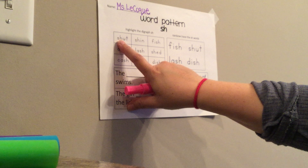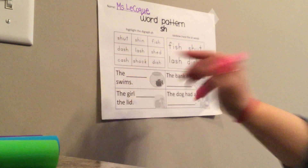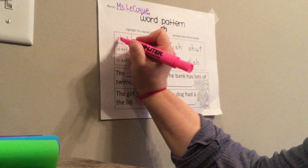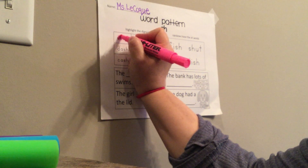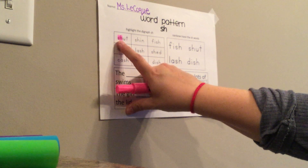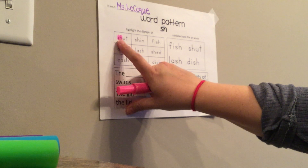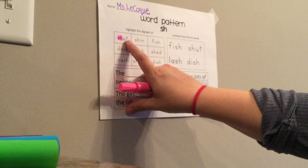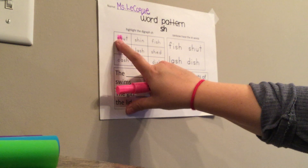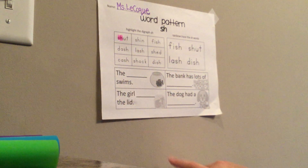So 'sh' together again says what, friends? Shh — that's right. So what I'm going to do is for my first word, I see 'sh' right away at the beginning. I'm going to highlight over the 'sh'. So let's try to sound it out. Get your finger ready: sh, uh, t. Sh, uh, t. Very good.